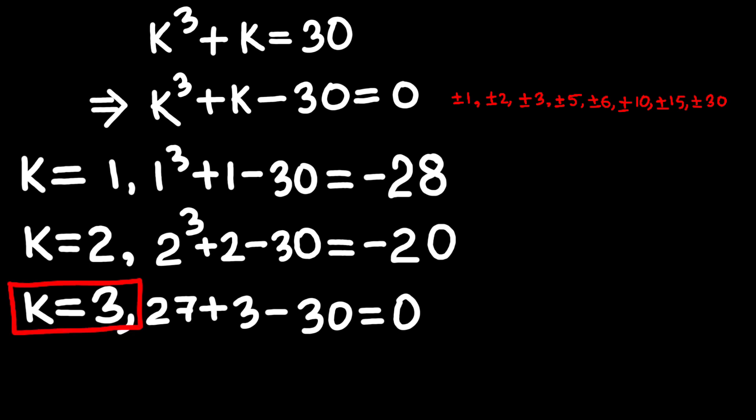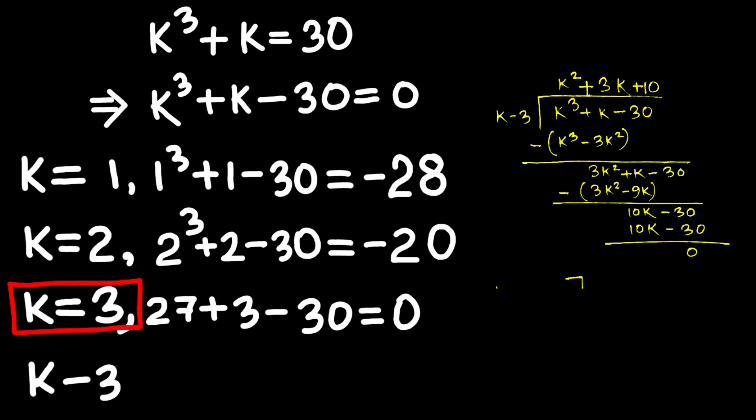Now here's what happens next. The story takes a twist. If 3 is a root, then K minus 3 is a factor. So we strip it down with synthetic division. And when the lock clicks, we're left with K squared plus 3K plus 10. So the equation is now open parentheses K minus 3 close parentheses times open parentheses K squared plus 3K plus 10 close parentheses equals 0.